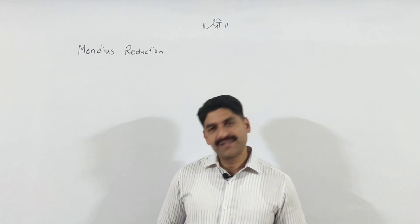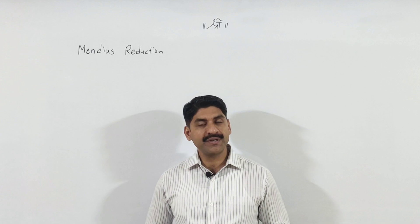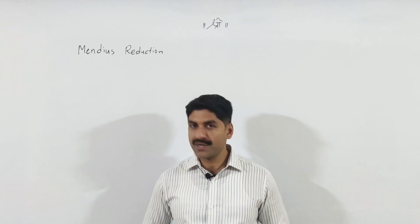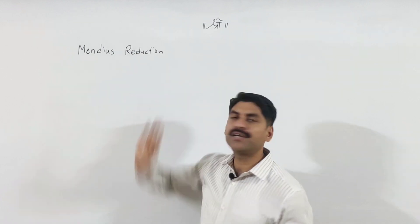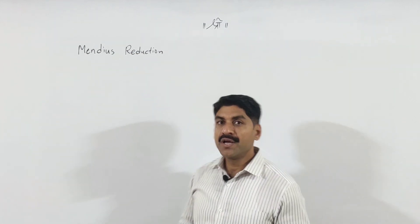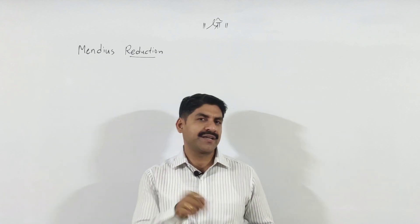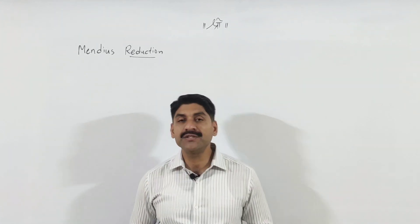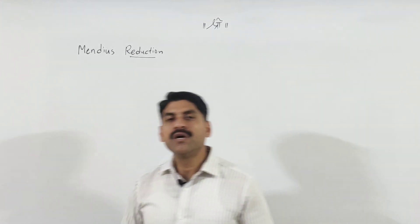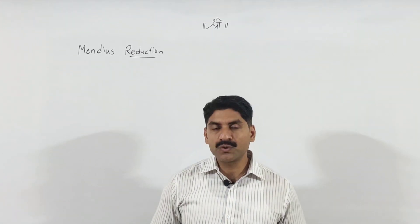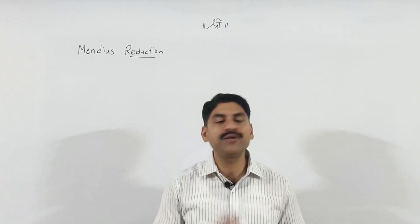Hello students, welcome to your tutorials. Today we have compounds containing nitrogen as a topic. An important reaction is reduction — specifically catalytic reduction. I have catalysts like Raney nickel, platinum, palladium, and we also use amalgam, sodium and alcohol, which is why we get nascent hydrogen.